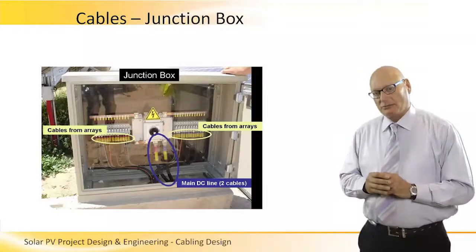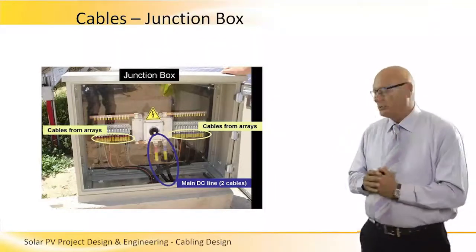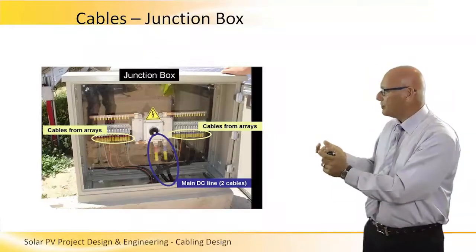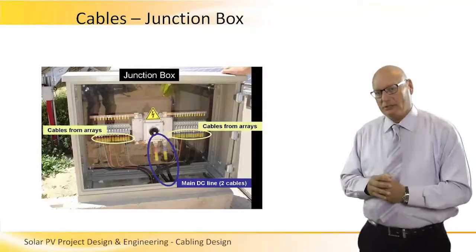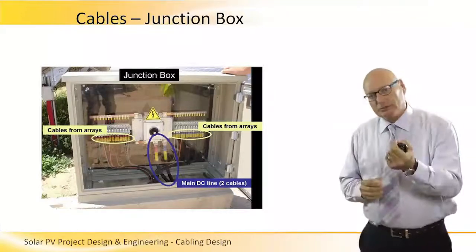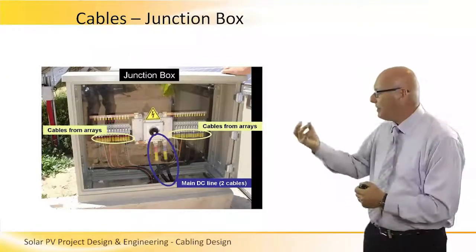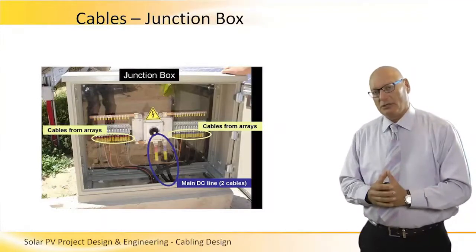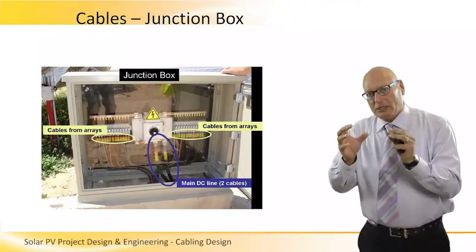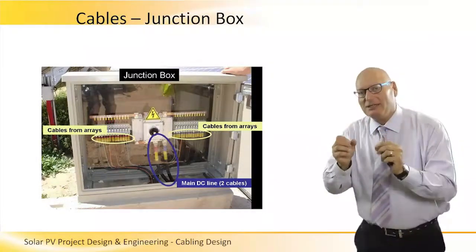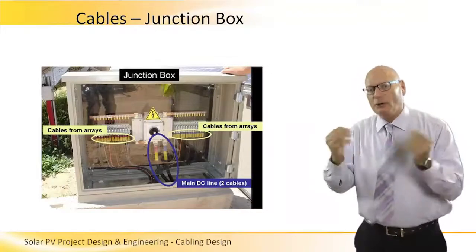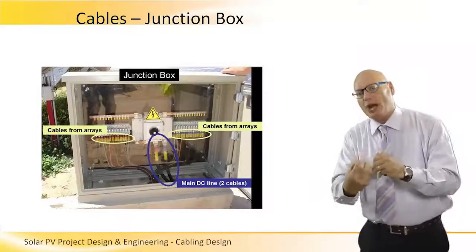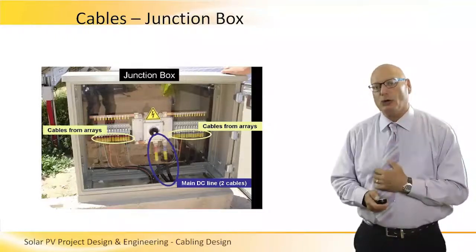Here is a good example of a junction box — and remember, we're still looking at the cables. On two sides of the junction box we see the cables from the arrays. The diameter of those cables is relatively smaller than the main DC line — two cables, plus and minus — coming out of the junction box. Please consider the difference in the diameters of the input cables coming from the array versus the output cables, plus and minus, coming out of the junction box. That's a very good example that one should follow.